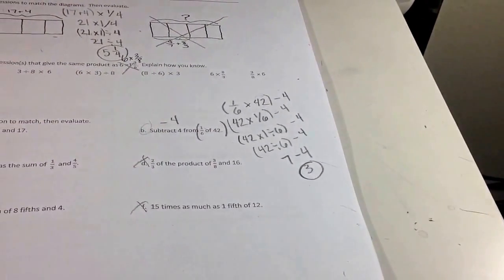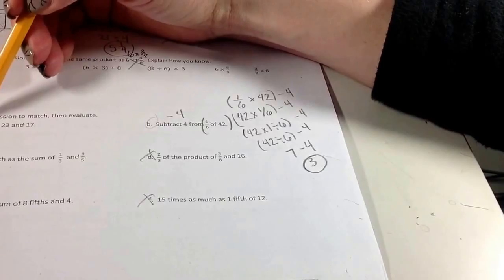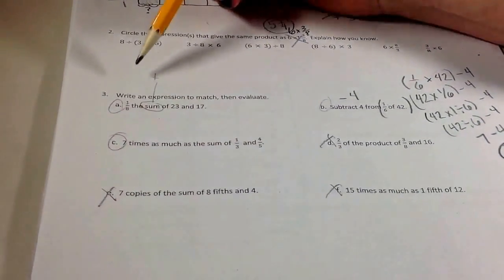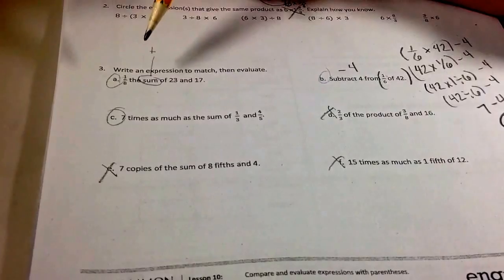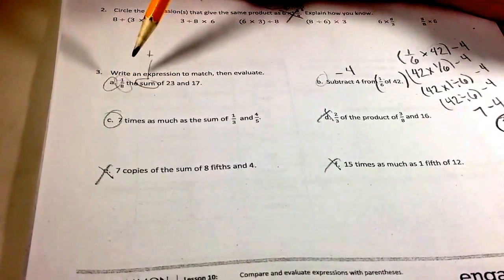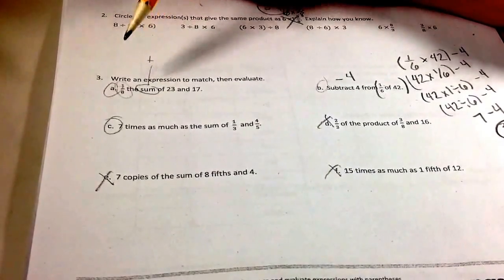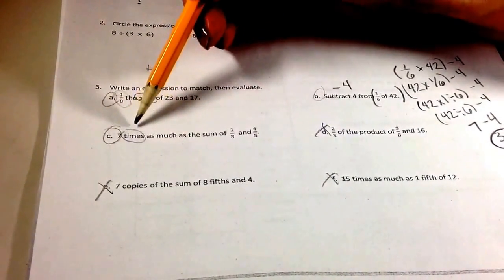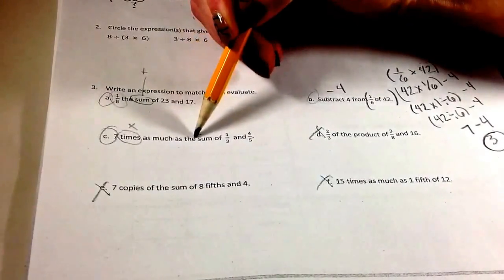So it's just understanding some of the other language that you'll see. Sum, we talked about sum means adding. Okay? 1 eighth the sum. So you're talking about the fraction of a number. So anytime something is the fraction of, you're multiplying by that fraction. 7 times. Times would be multiply. And again, sum is adding.